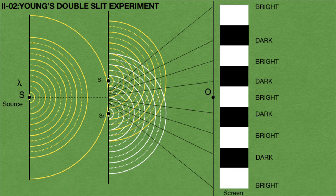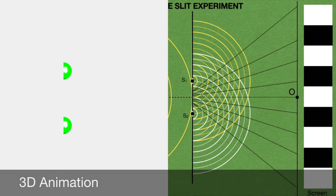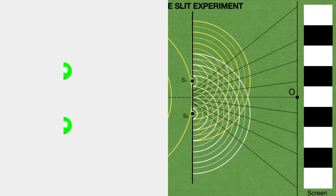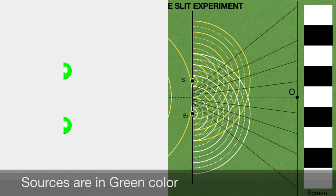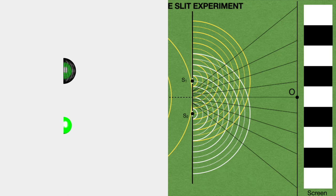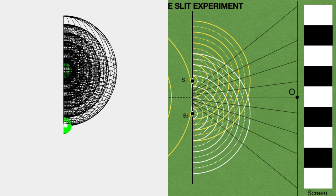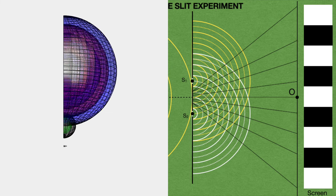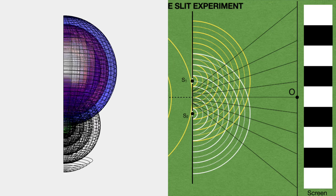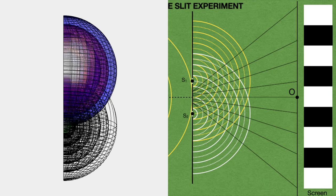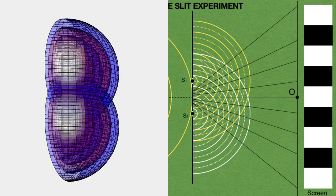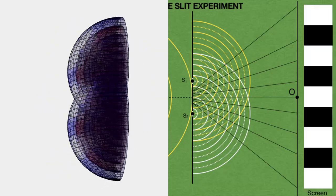Now we can see the superposition of waves in the 3D animation also. Here I considered two light sources S1 and S2 in green color. From these two light sources, crests and troughs are formed in the form of spherical wavefronts. As a result, superposition takes place between the S1 and S2 light sources, and successively bright and dark fringes are formed. This is the analogy of the 3D animation.